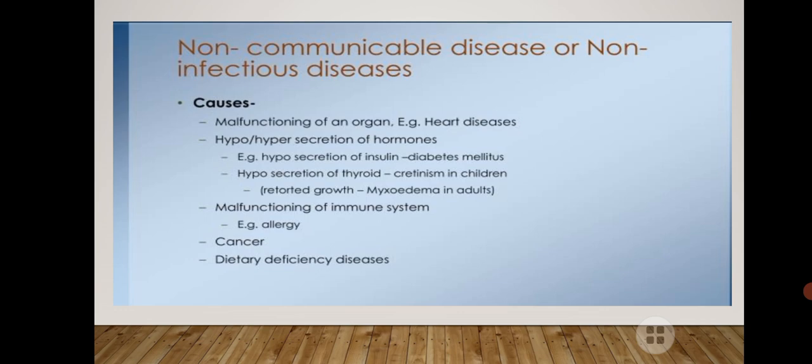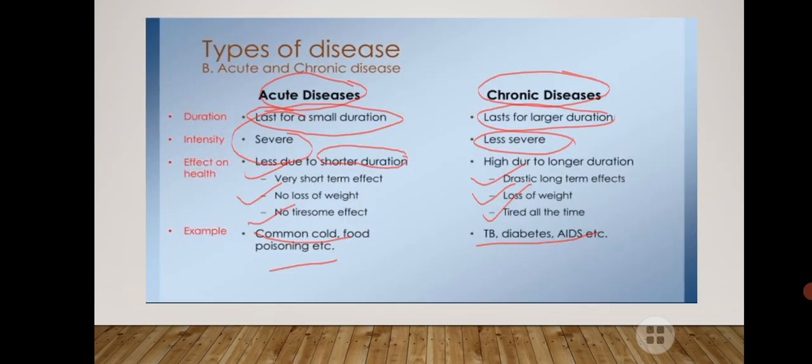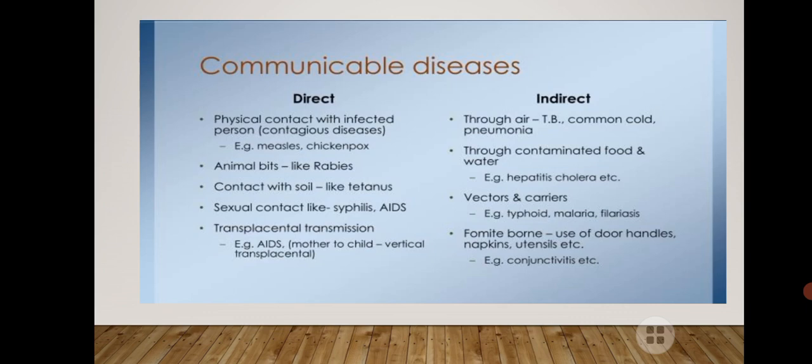To summarize, there are mainly two types of diseases: acute and chronic. Acute diseases remain for a very short period of time inside the body and do not show harmful long-term effects. Examples are common cold, food poisoning, and cough. Chronic diseases are long-duration diseases with very harmful effects on the patient's body — examples include TB, diabetes, and AIDS. In terms of microorganisms, diseases are classified as communicable or infectious, and non-communicable or non-infectious.